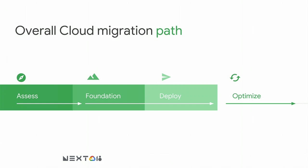Then we start talking about optimization — looking at long-term plans, what you could do with what you have, where you'd like to improve, what isn't working as well as you'd like, and new things you'd like to try. This is a process that continues as our relationship continues. The optimization is the last step, but it's ongoing throughout our relationship with customers.